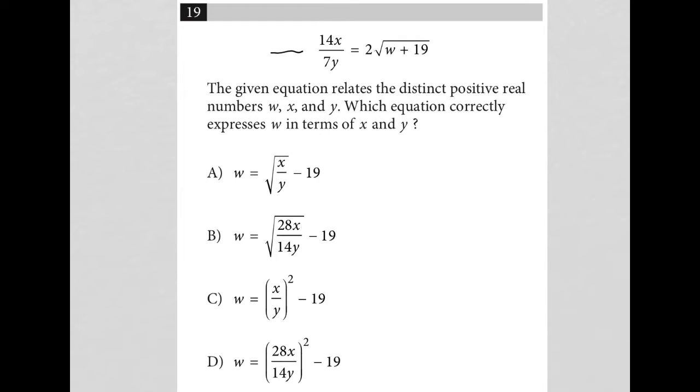So this question starts off by providing us with this equation: 14x over 7y equals 2 radical w plus 19. I'm a big fan of always simplifying whenever I can. So I'm going to simplify this and say 7 goes into 14 twice, goes into itself once, which means this turns into 2x over y equals 2 radical w plus 19.